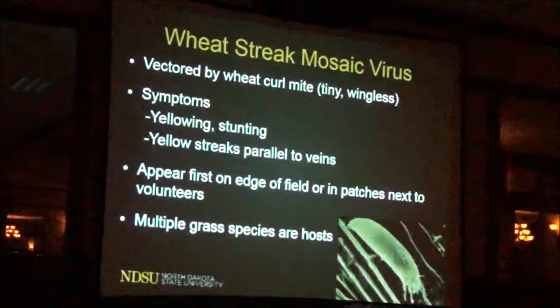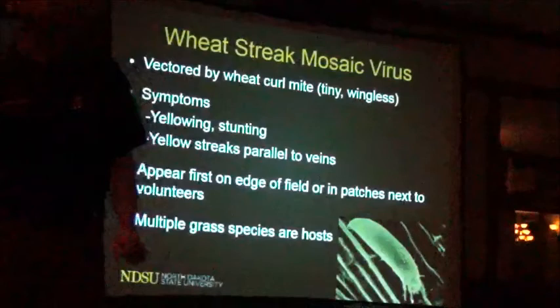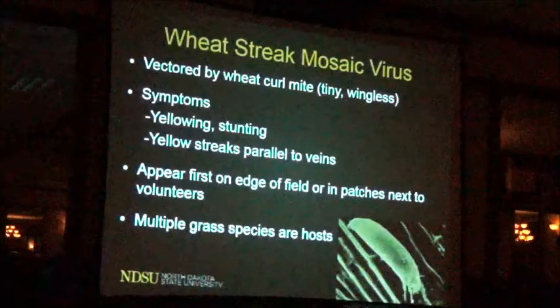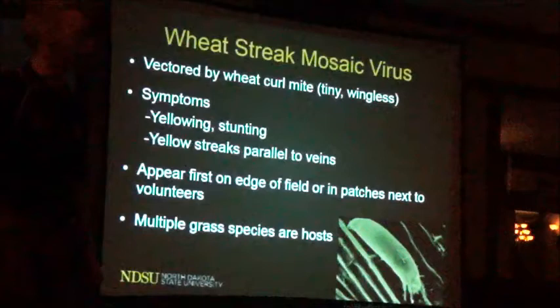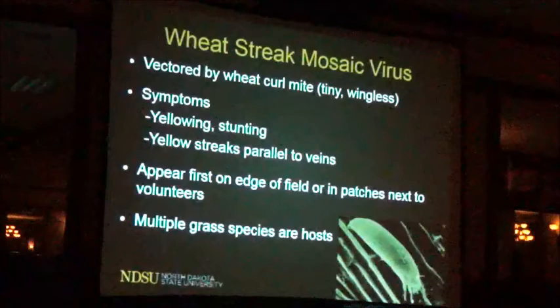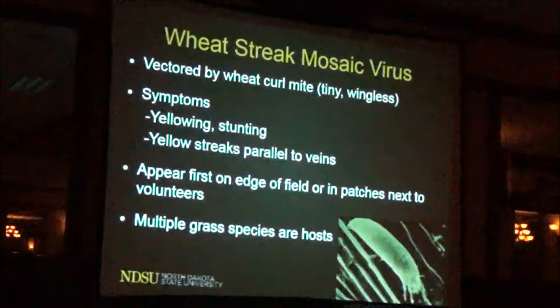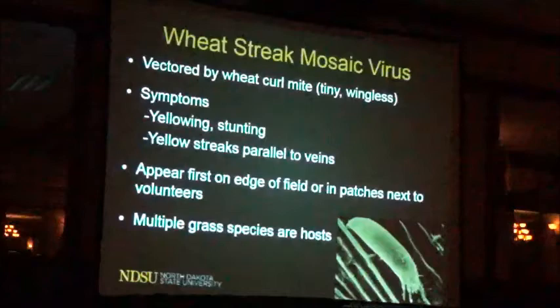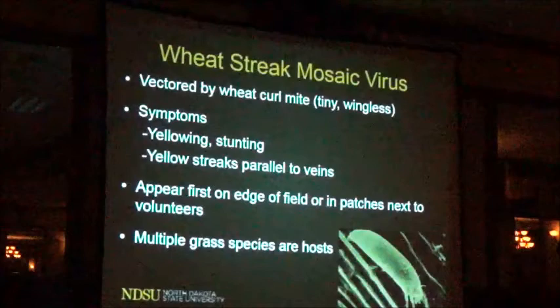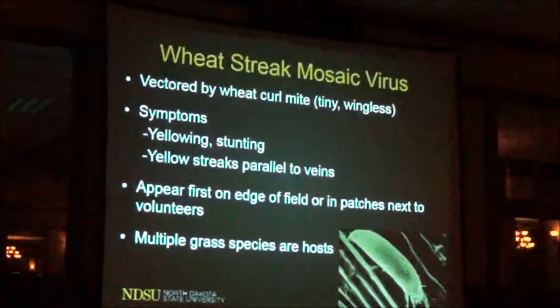Another category of diseases we face is virus diseases. In small grains in North Dakota, we have the barley yellow dwarf virus, which is aphid-vectored, but probably the most important is wheat streak mosaic virus. With viruses, there's always a vector involved—in this case, the wheat curl mite. It's tiny, you can't see it. Typical symptoms include yellowing, stunting, and streaking parallel to the veins, giving that mosaic appearance. Because it's vectored by a biological organism, you may see it in patches, moving from a field edge across the field with wind currents. The mites don't have wings, so they depend on wind.